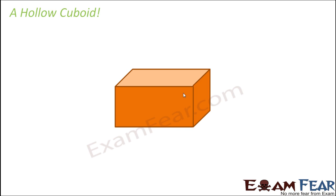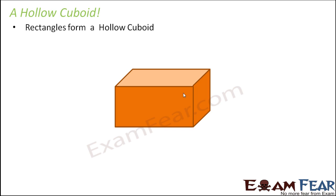That was an example of a solid cuboid where it is not hollow from inside — everywhere you have one rectangle, and so many rectangles form the cuboid. You can even make a hollow cuboid using rectangles. Let's look at this example.